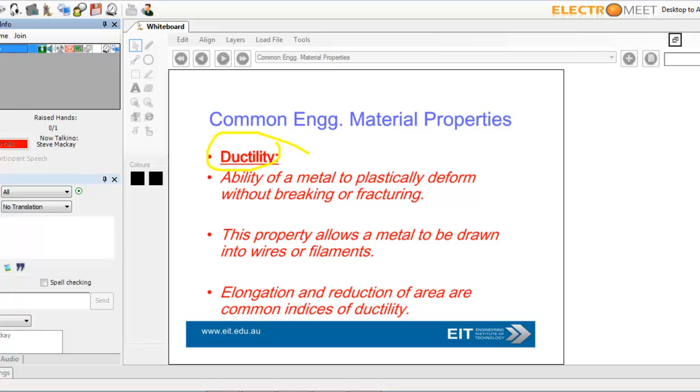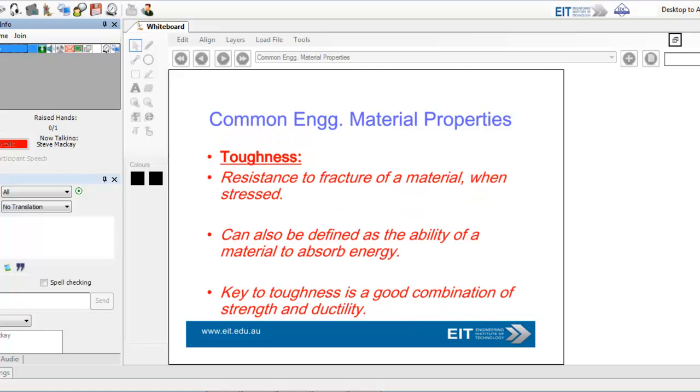The other term we use is ductility - ability of a material or metal to plastically deform without breaking or fracturing. The more ductile it is, the more likely it will deform without actually fracturing. You can think of stretching a metal, whereas something like carbon or a diamond, it's got a very low level of ductility.